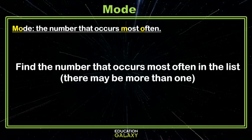The mode is the number that occurs the most often. I like to remember it, because the M and the O in mode kind of stand for most often. So to find the mode, you want to find the number that is on your list the most amount of times. There may be more than one.